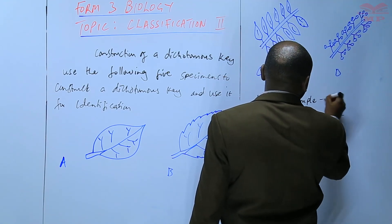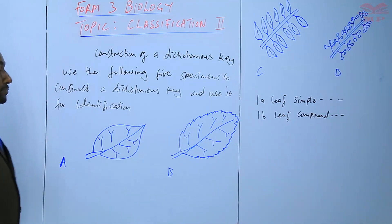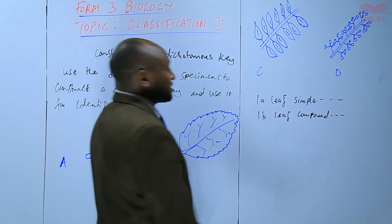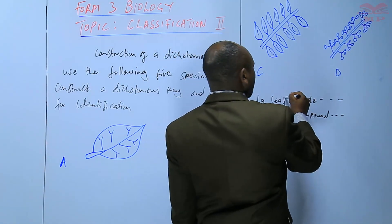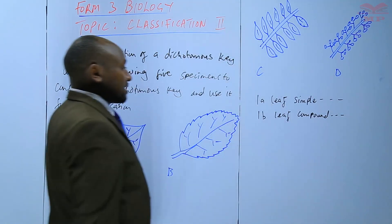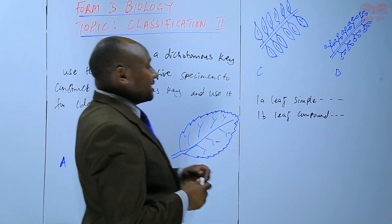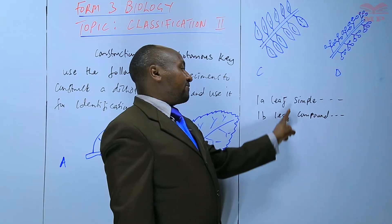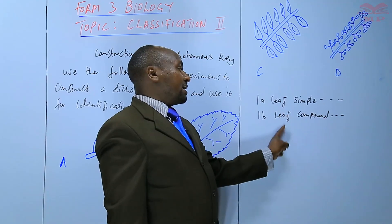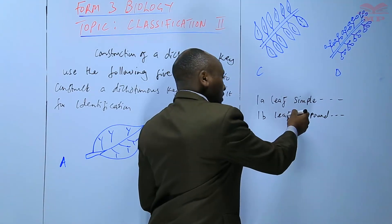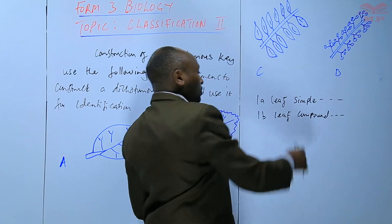That way, we'll be able to divide the specimens into those that have simple leaves against those that have compound leaves. We are using identical forms of words, leaf leaf, leaf simple, leaf compound. That's how we said we used identical forms of words.